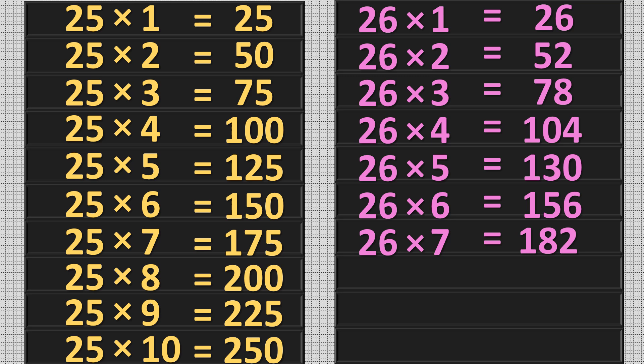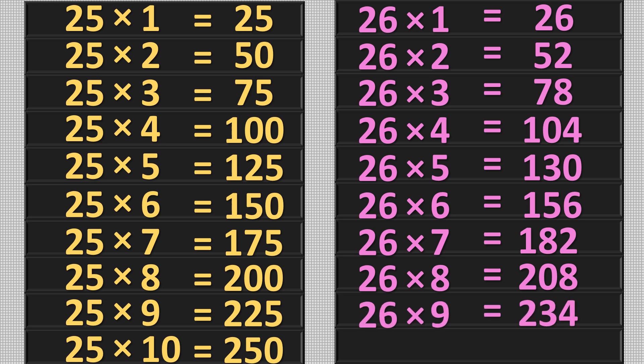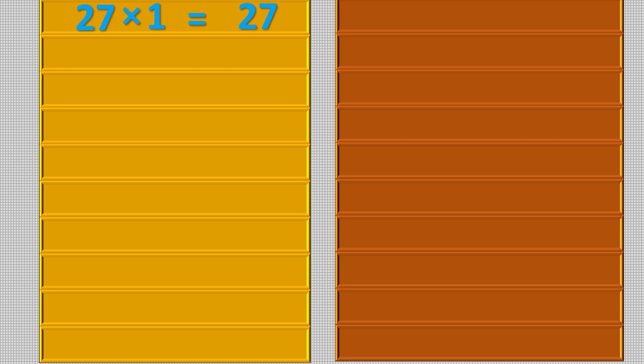26 sevens are 182, 26 eights are 208, 26 nines are 234, 26 tens are 260, 27 ones are 27.